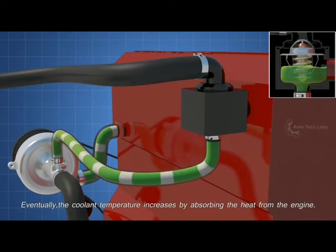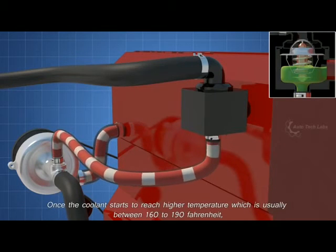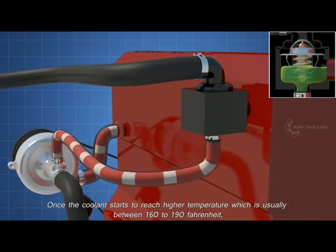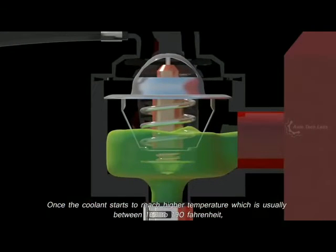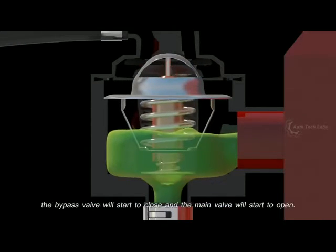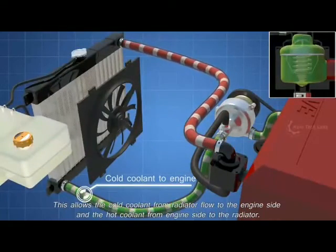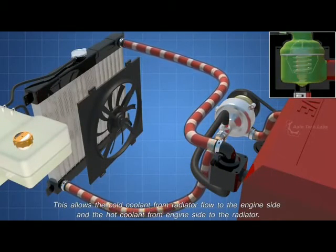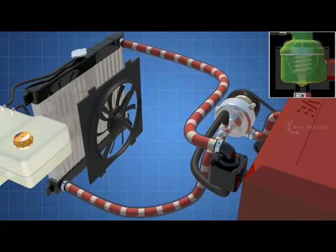Eventually, the coolant temperature increases by absorbing the heat from the engine. Once the coolant starts to reach higher temperature, which is usually between 160 to 190 Fahrenheit, the bypass valve will start to close and the main valve will start to open. This allows the cold coolant from radiator flow to the engine side, and the hot coolant from engine side flow to the radiator.